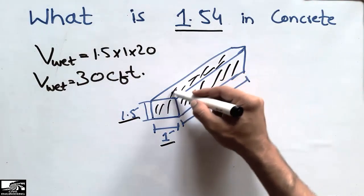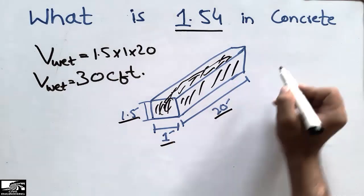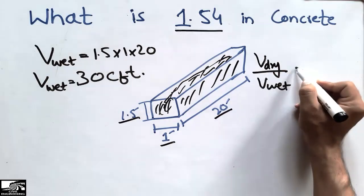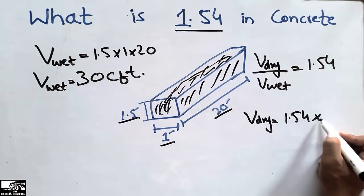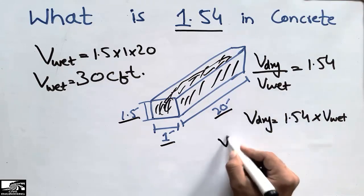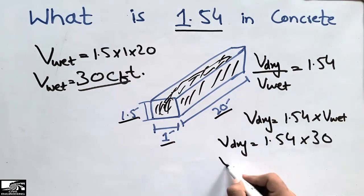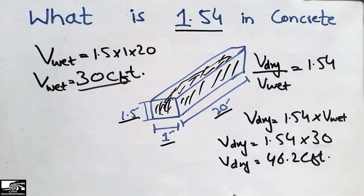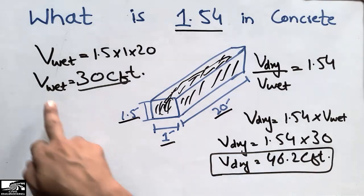Now I want to find the volume of the dry concrete. Since the ratio of dry concrete volume to wet concrete volume is 1.54, we multiply: volume of dry = 1.54 × volume of wet concrete. The wet concrete volume is 30 cubic feet, so the volume of the dry concrete comes out to be 46.2 cubic feet. This means that without water, the concrete occupies 46.2 cubic feet — more than the wet volume by a ratio of 1.54.